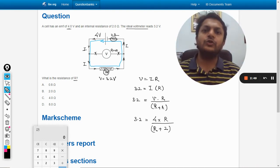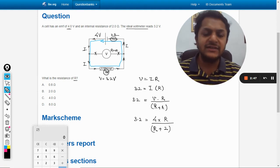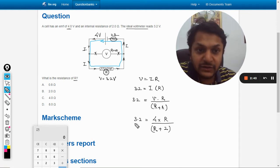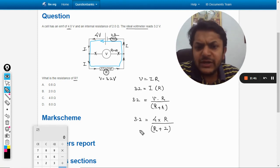So hence both of them are in series, so R equivalent is R1 plus R2. It is R plus 2, and here this will be equal to 3.2. So this will become a linear equation in one variable which can be solved.